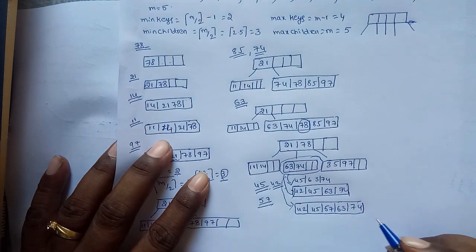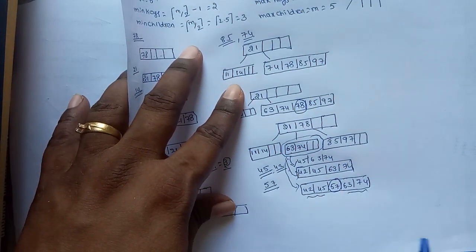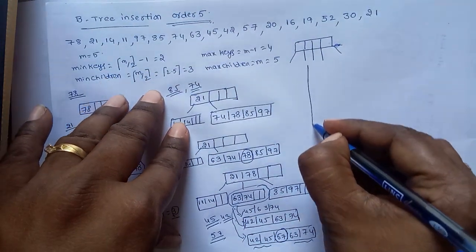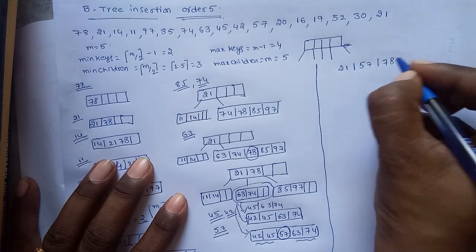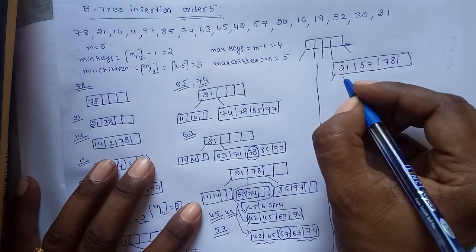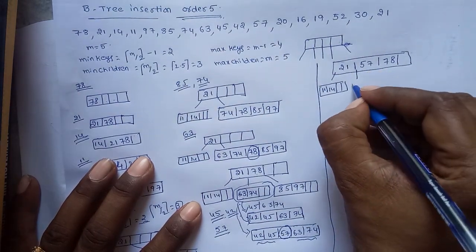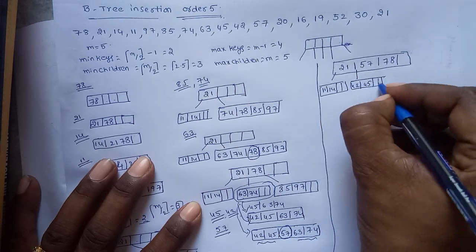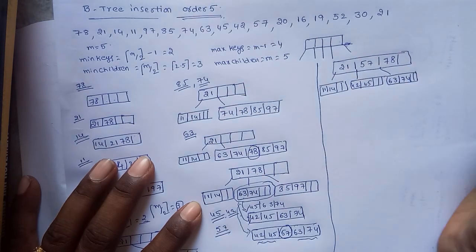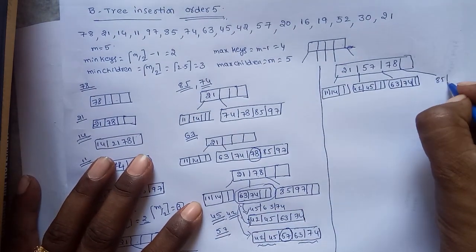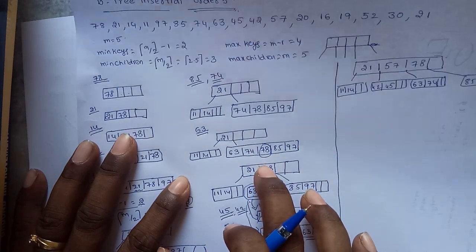Perform a split operation — move the middle element 57 to the root. The root becomes 21, 57, 78. For 21, the left child is 11, 14. 42 and 45 become the left child of 57, and 63 and 74 become the right child of 57. For 78, the right child remains 85, 97.